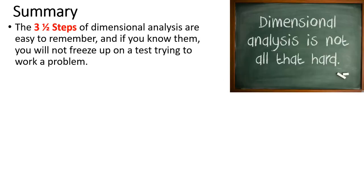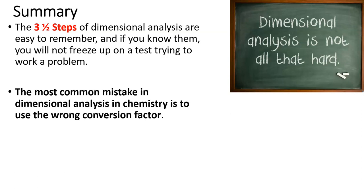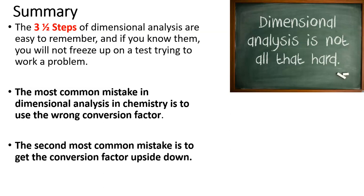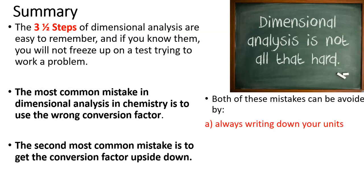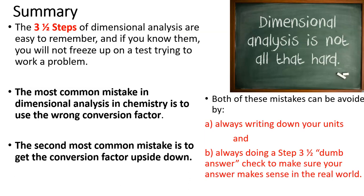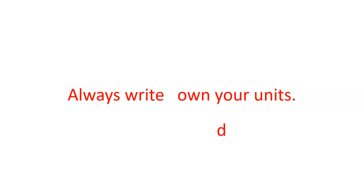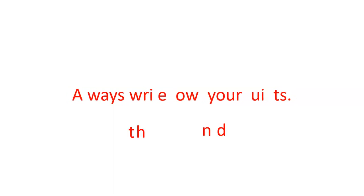So, to summarize, the 3.5 steps to use every time, you're not going to freeze up, and hopefully, you'll get the answer right. Most common mistake is to get the wrong conversion factor. That doesn't happen that often in everyday sorts of problems like we've been doing. Second most common mistake is to get the conversion factor upside down. And both these mistakes can be avoided by, now this is going to be a shock, always writing down your units. And then secondly, always doing that step 3.5 stupid answer check to make sure your answer makes sense. So, I'm going to close with this, and since I'm lacking the letters that I need to make a good the end, there it is. That's it.